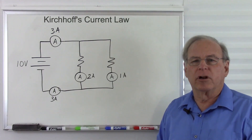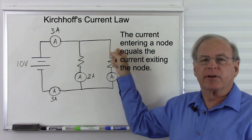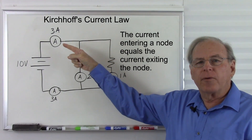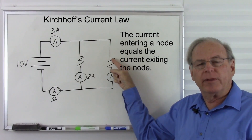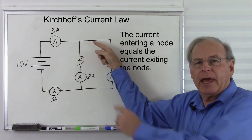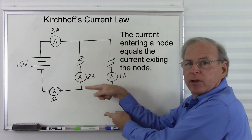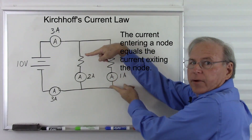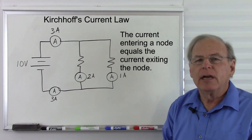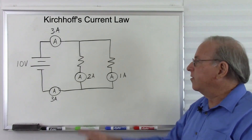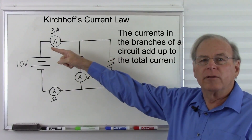This is demonstrating Kirchhoff's current law, which states that the current flowing into a node will equal the current flowing out of a node. So I have three amps flowing into this node, two amps flowing this way, one amp flowing this way — there's my three amps. I have three amps going in and three amps coming back out. A more useful way of stating Kirchhoff's current law is that the sum of the currents in the branches of the circuit will equal the total current.